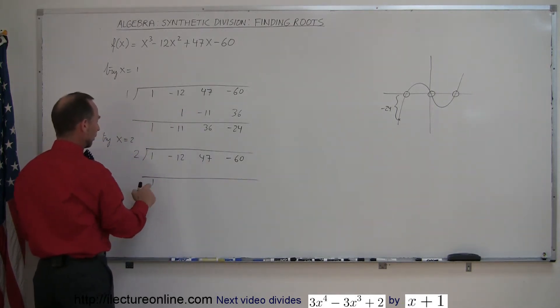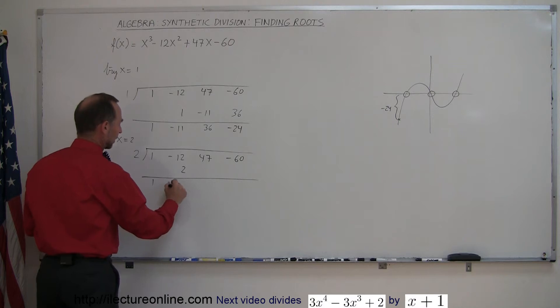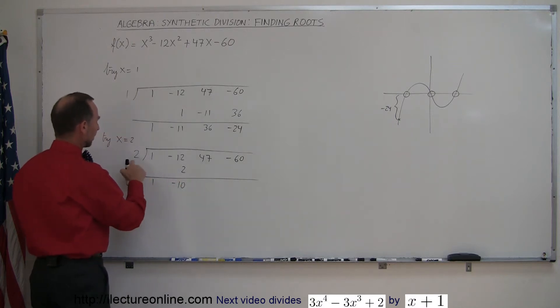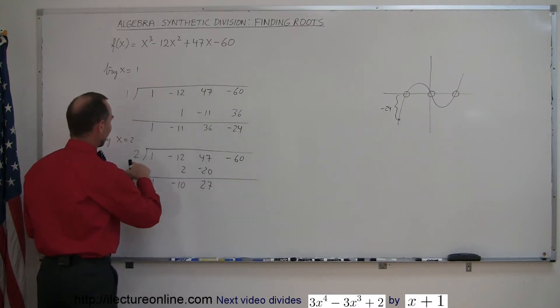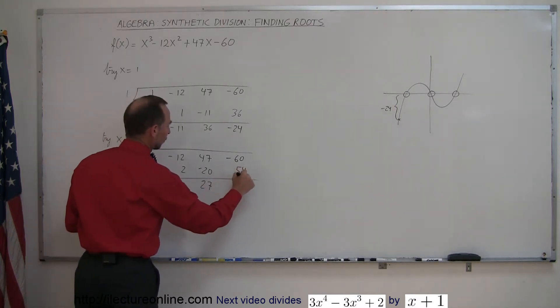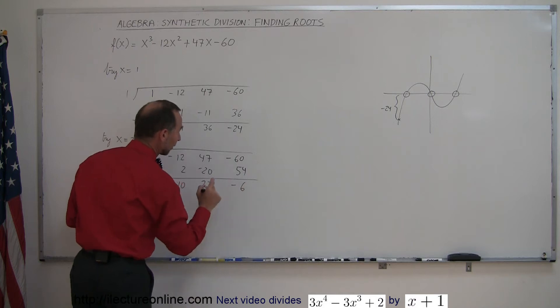Drop the first value of 1. 1 times 2 is 2. Add those together, you get minus 10. Minus 10 times 2 is minus 20. Add those together, we get 27. 27 times 2 is 54. Add those together, we get a minus 6.